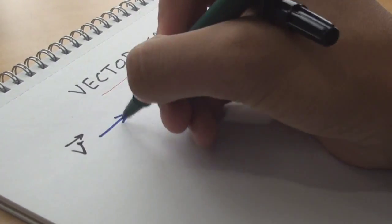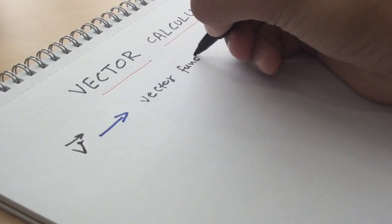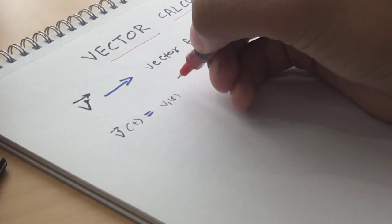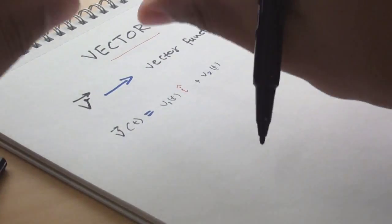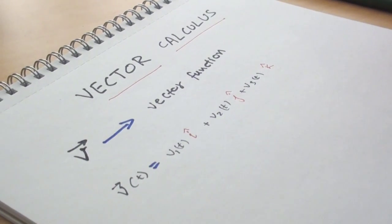Vector calculus is where physics and math join forces, the 8th sign of the apocalypse, where v is the vector function. And in the case of a Cartesian coordinate system, we may write v(t) as v1(t)i cap plus v2(t)j cap plus v3(t)k cap, where i, j, k have the usual meanings.